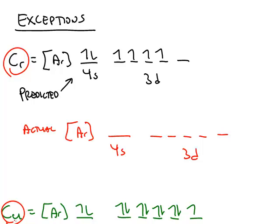Both are found in the first row of the D block, in the 3D subshell. The predicted electron configuration for chromium would be the 4S subshell is full, and then the 3D has four electrons.